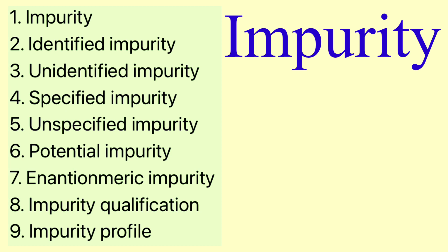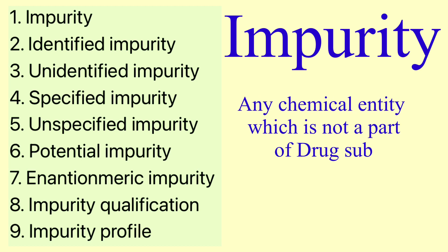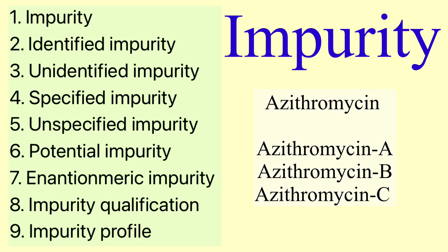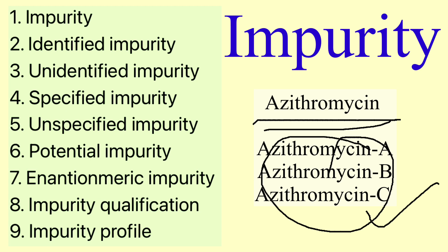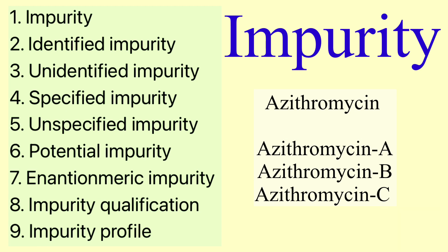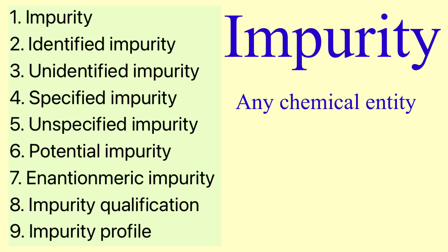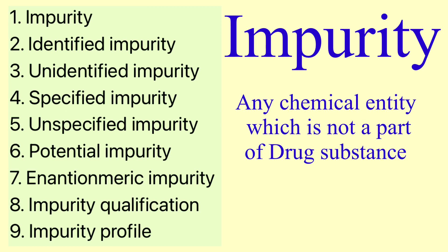The first term is impurity. An impurity means any chemical entity which is not part of your drug substance. For example, with azithromycin drug substance, compounds like azithromycin A, azithromycin B, and azithromycin C are also found alongside it. These chemical entities are called impurities because they are not part of azithromycin but are found along with it. So the definition of impurity is: any chemical entity which is not part of your drug substance.